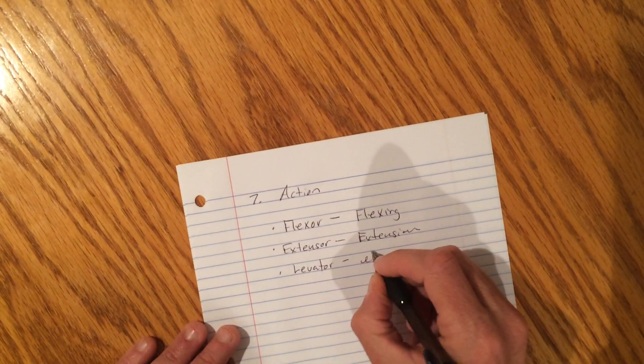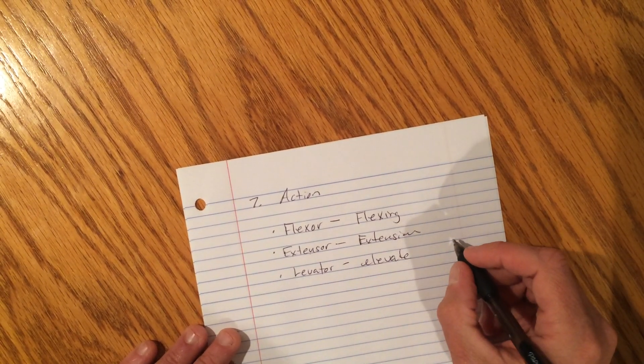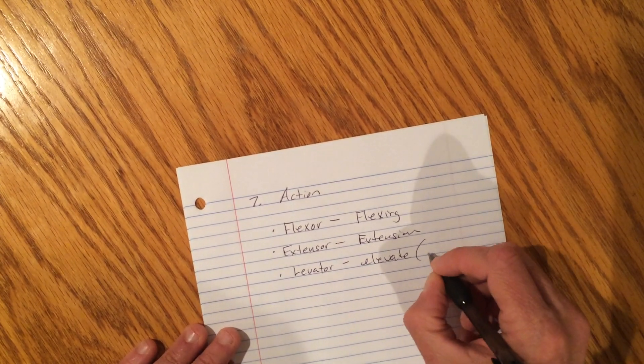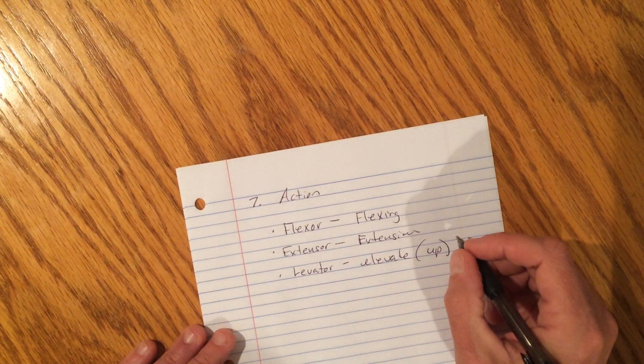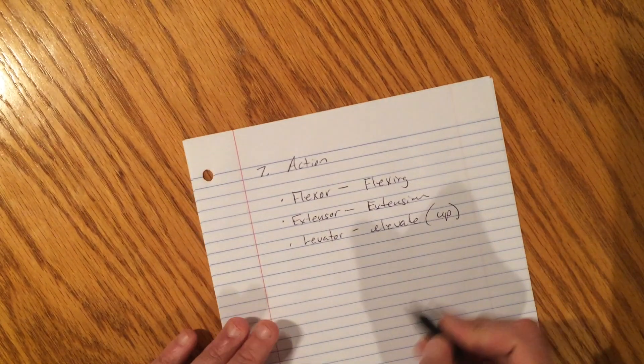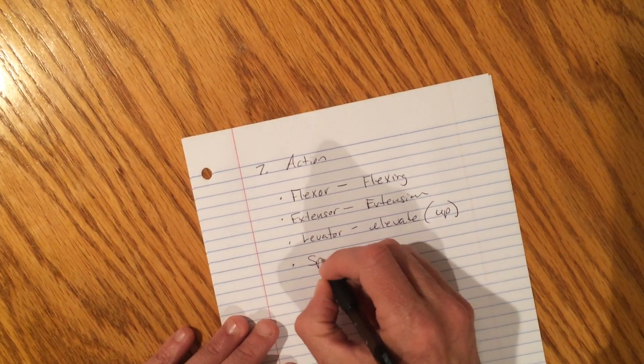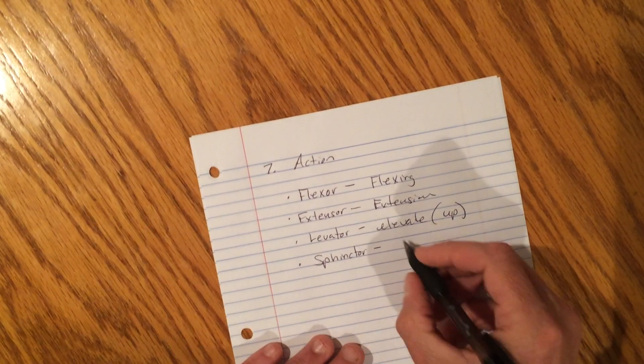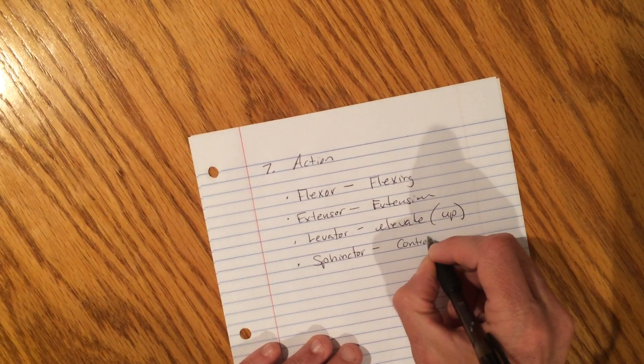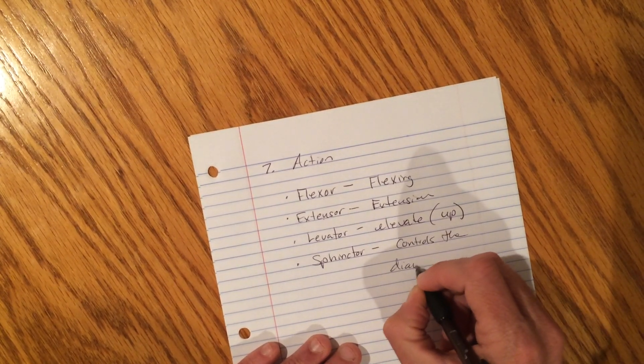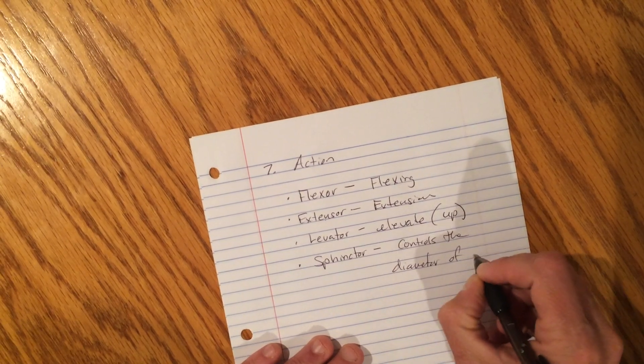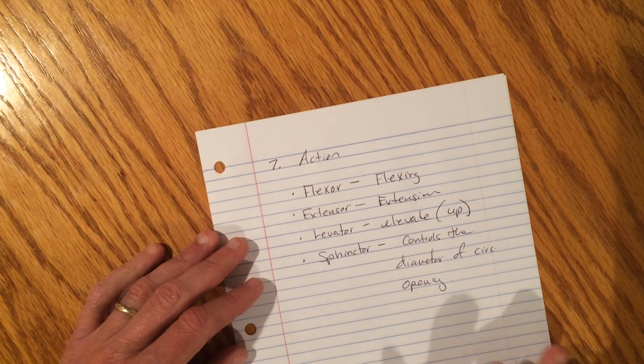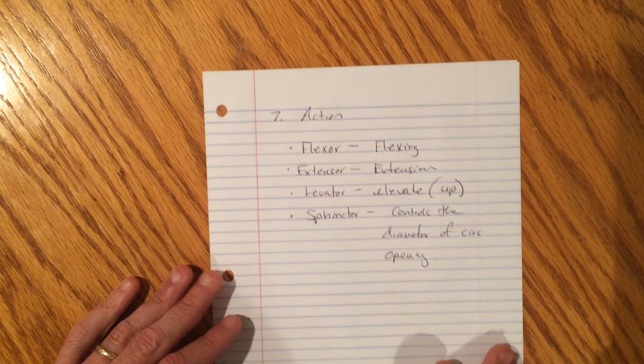All right. And then, there's another one called a sphincter. What's a sphincter do? You guys already know this. The sphincter controls the diameter of a circular opening. Sphincter says what? What? Sphincter says what? Does anybody know that movie? It's really funny. Sphincter says what?